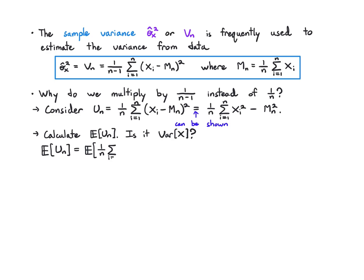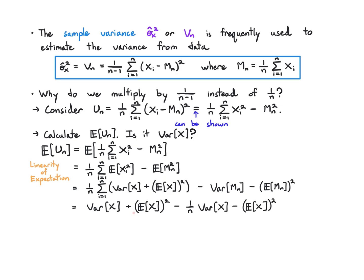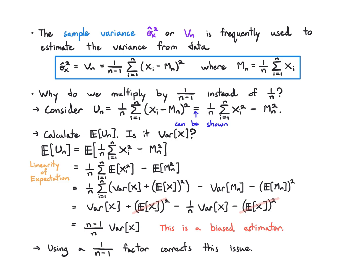Let's calculate the mean of this estimator using 1/n. Plugging in and using linearity of expectation, I get E[x_i^2] minus E[m_n^2]. Using the alternate variance formula, this becomes Var(x) + (E[x])^2 minus Var(m_n) minus (E[m_n])^2. Substituting Var(m_n) = 1/n * Var(x) and E[m_n] = E[x], the E[x] terms cancel, and I end up with (n−1)/n times Var(x). This is not an unbiased estimator — it's biased because its expectation is a constant factor times the true variance. Using the 1/(n−1) factor corrects this exactly, giving an estimator V_n with expectation equal to Var(x).